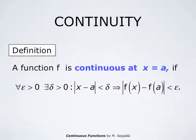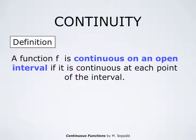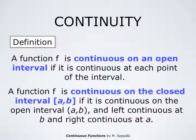Without resorting to limits, we define continuity at a point x equals a as follows: a function f is continuous at x equals a if for all positive numbers epsilon, one can always find a positive number delta such that whenever the absolute value of x minus a is less than delta, then the absolute value of f of x minus f of a is less than epsilon. We say that a function is continuous on an open interval if it is continuous at each point of the interval, and the function is continuous on the closed interval from a to b if it is continuous on the open interval from a to b, left continuous at b, and right continuous at a.